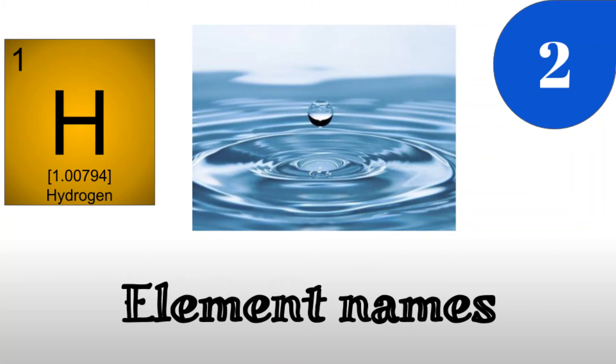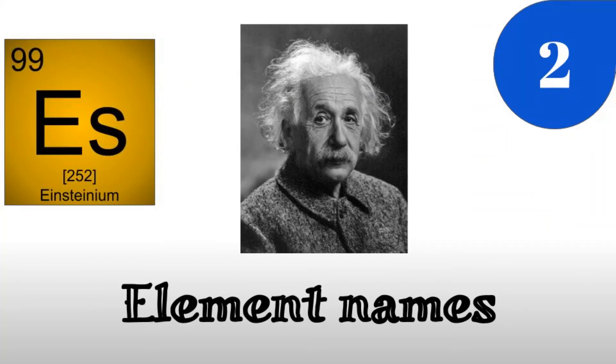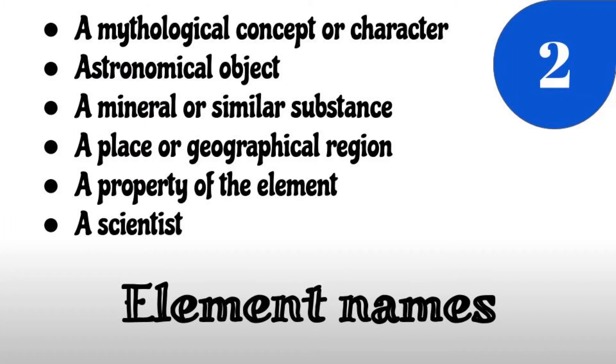Finally, element names can refer to a scientist. A common example of this is Einsteinium, which is named after one of the greatest scientists, Albert Einstein.